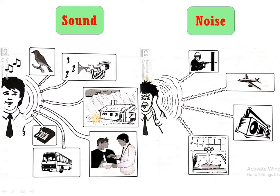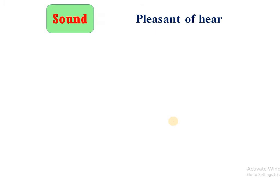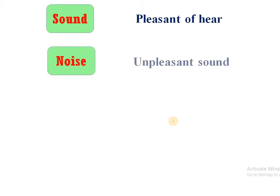But sometimes this sound creates an irritation to the person. In the second image you can see that some types of sounds can create irritation to a human being. The sound which creates irritation is the unpleasant sound. And the unpleasant or unwanted sound is nothing but noise. So sound is pleasant to hear and noise is unpleasant or unwanted sound.